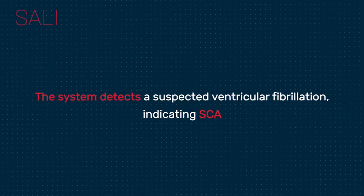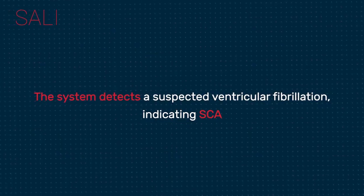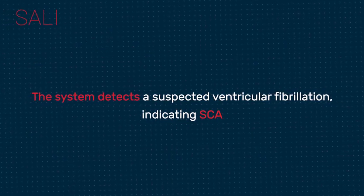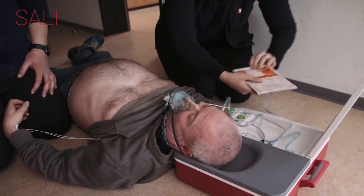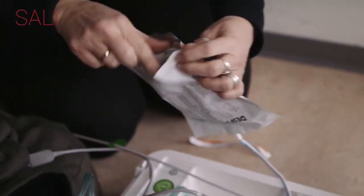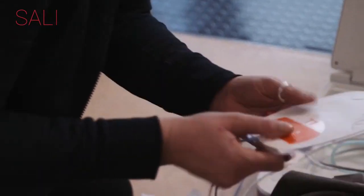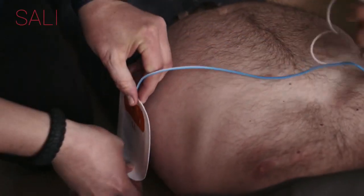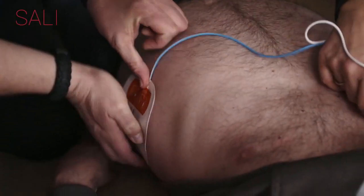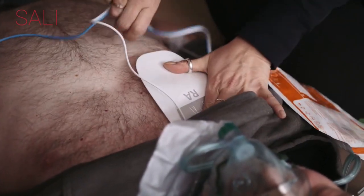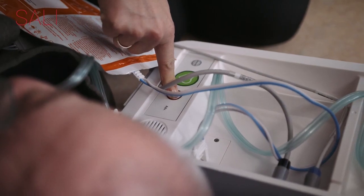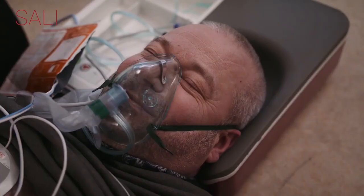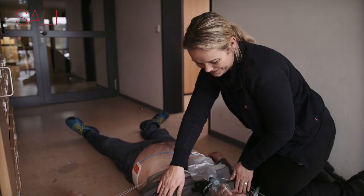The system detects a suspected ventricular fibrillation, indicating sudden cardiac arrest. Take the pads from the appliance box and remove the protective material from the pads. Put the pads on the chest as indicated and press them firmly on the patient's skin. SALI analyzes the patient's ECG and decides a shock is required. A shock is delivered and the patient regains consciousness.